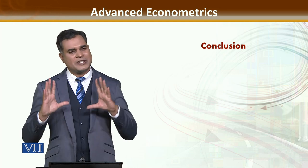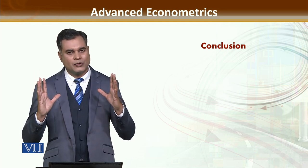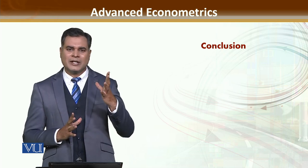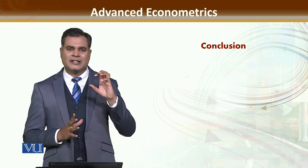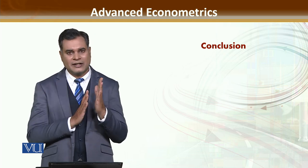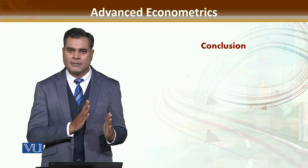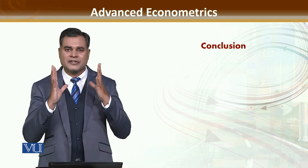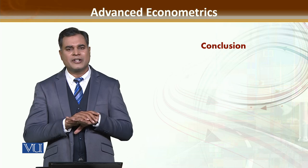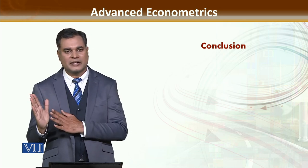There is some theoretical background. You have some literature review which tells us whether this situation can be handled by correlated errors or not. If the literature says yes, then we can apply seemingly uncorrelated regression. If literature says no, this situation may not be correlated, then we will not use SUR and we will move forward.